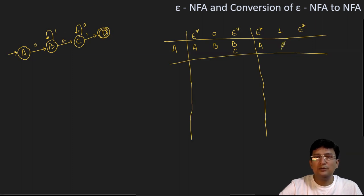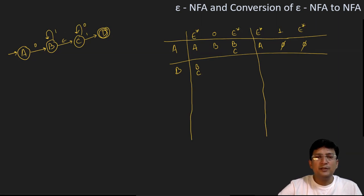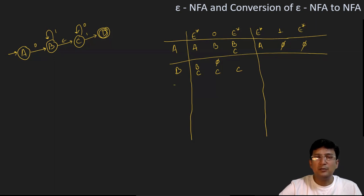A on getting one is not defined, so epsilon closure gives phi. Now taking state B: epsilon closure of B is {B, C}, which we already computed in the previous step. B on getting zero is undefined, but C on getting zero is defined and remains at state C. The epsilon closure of C is just C, since C can only remain at state C by taking epsilon.